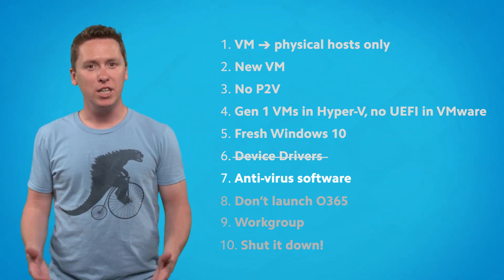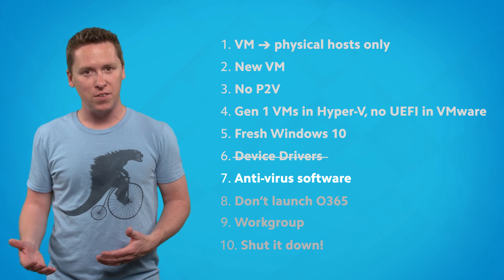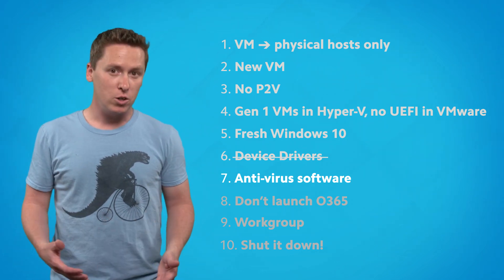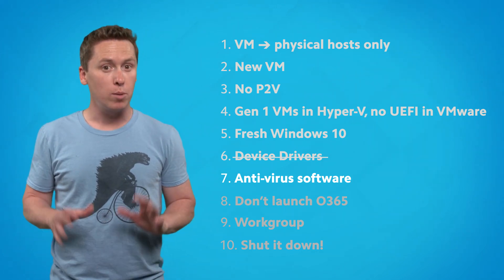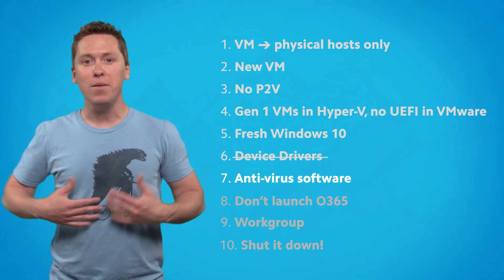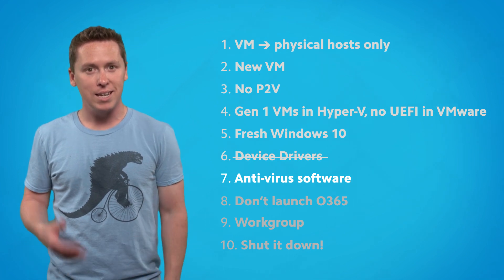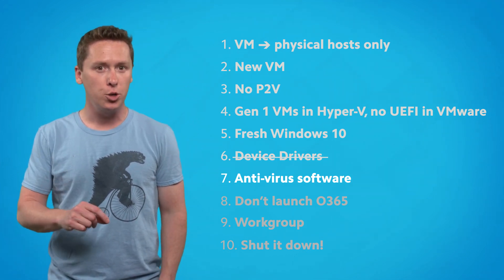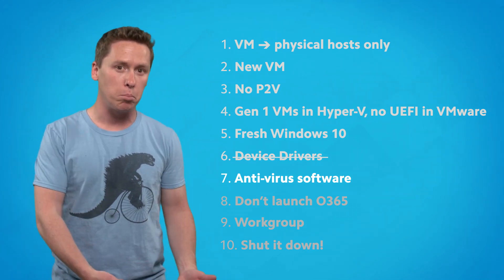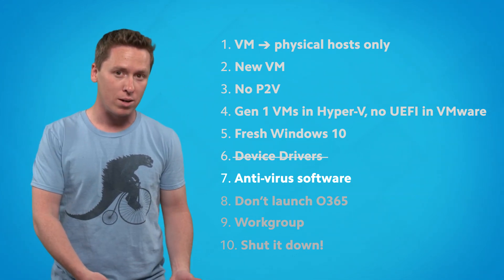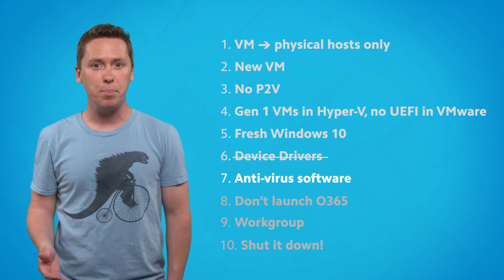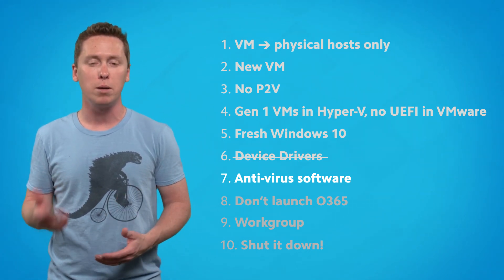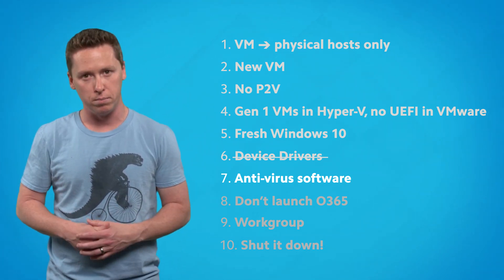Number seven: consider leaving out antivirus software. Antivirus software does its job really well, even when we're not doing anything malicious. Rather than include it and find out that it breaks the deployment process, skip it and use a deployment task or group policy to install it post-deployment.